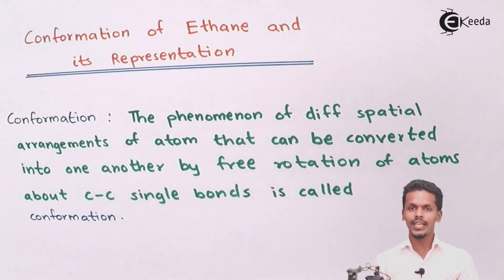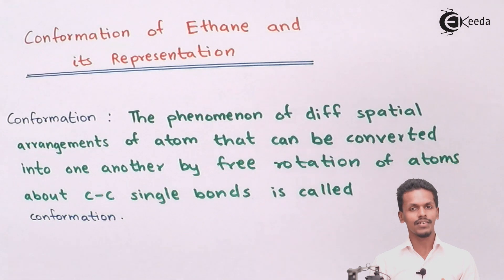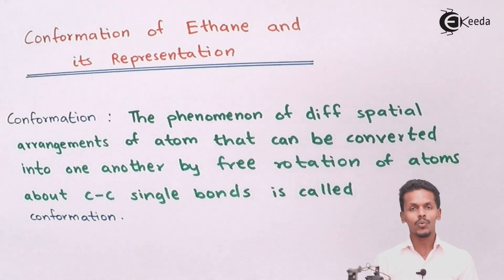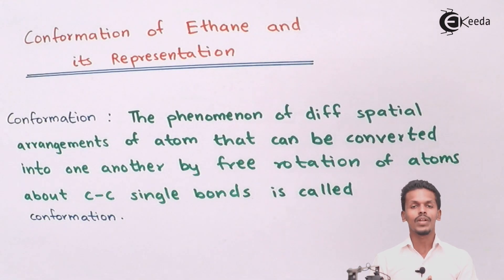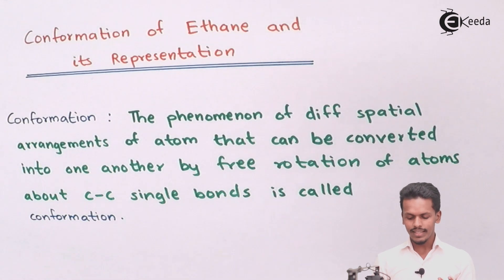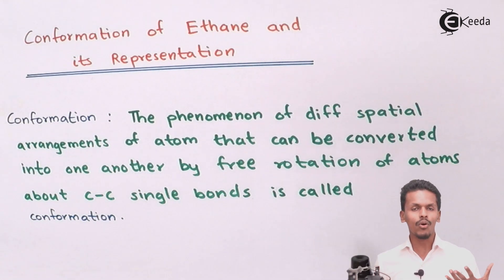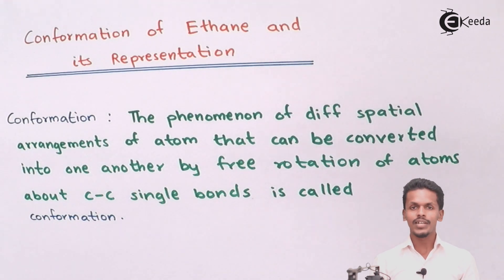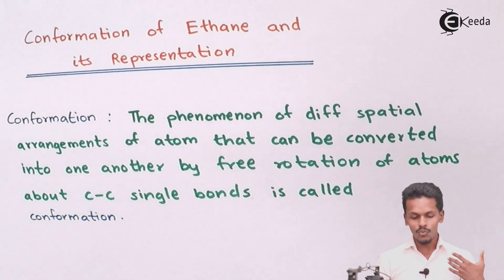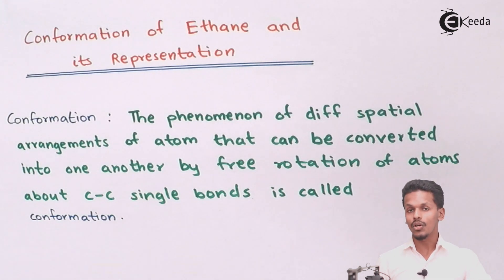This can be better explained when we take the example of conformation of ethane. Essentially, conformation refers to the phenomenon where free rotation of atoms can be brought about in terms of the carbon-carbon single bond.